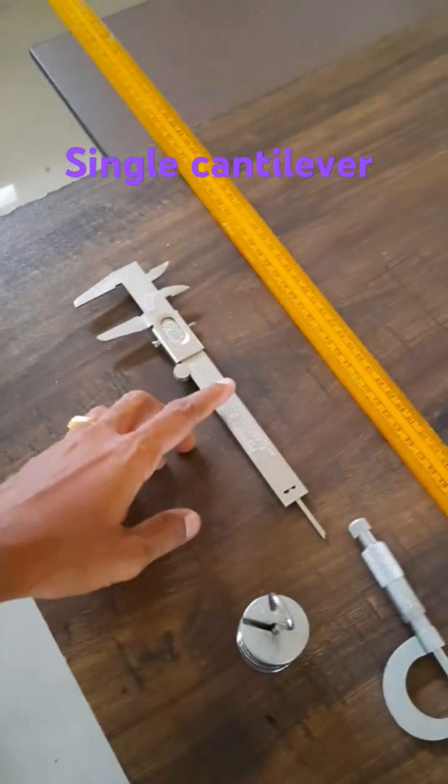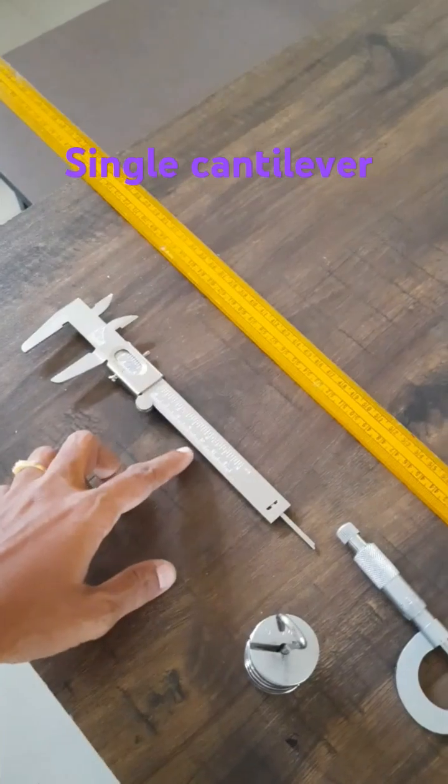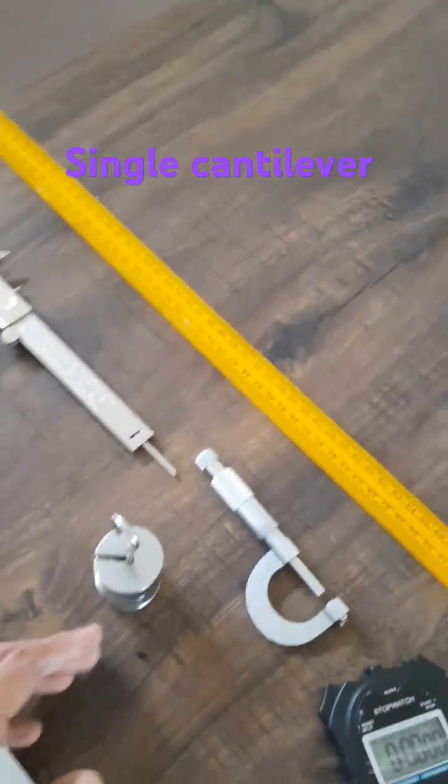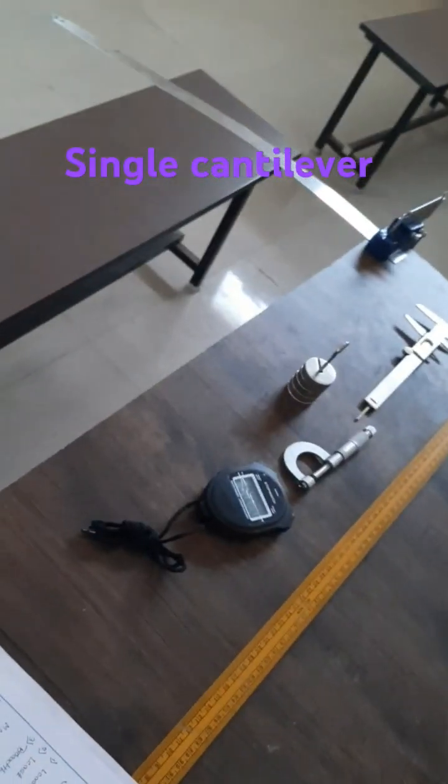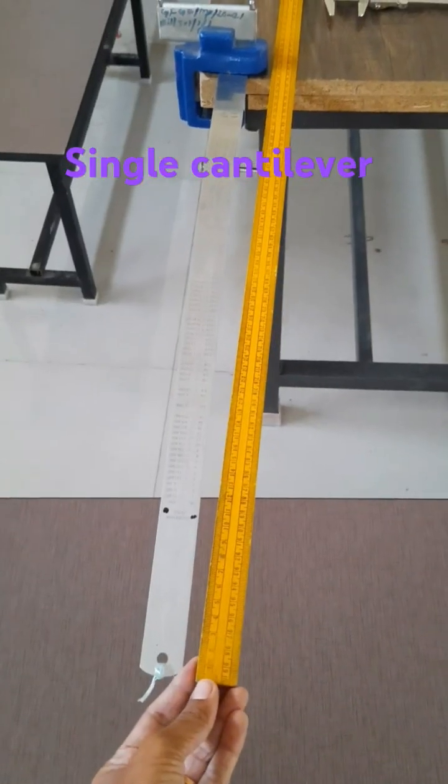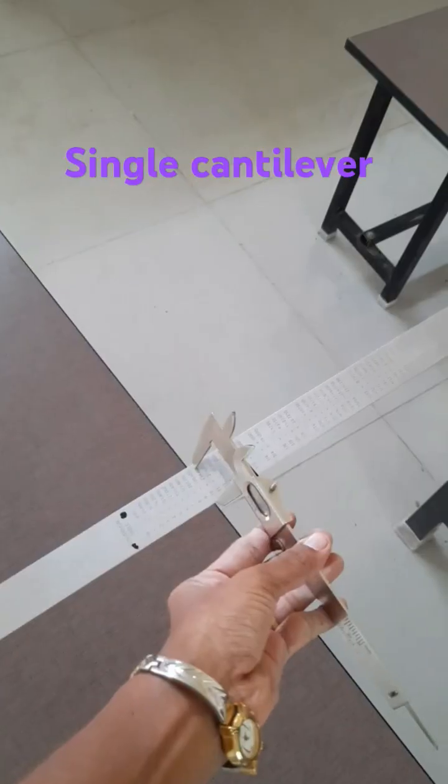Screw gauge, vernier caliper, meter scale, slotted weights, stopwatch. Measure the length of this metal strip and breadth using vernier caliper.